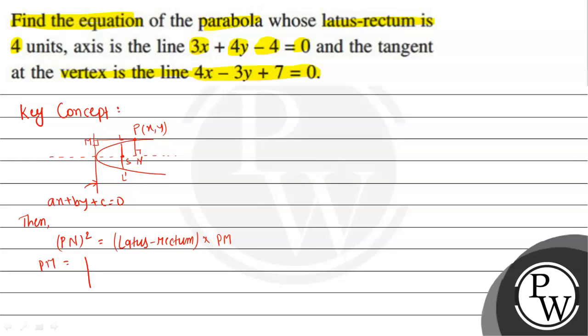PM is the perpendicular distance from a point to a line ax + by + c = 0. This is given by |ax + by + c| divided by √(a² + b²). We will use this same concept to solve this given question.